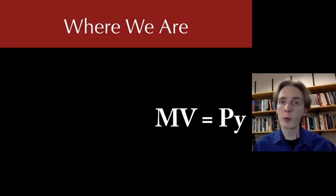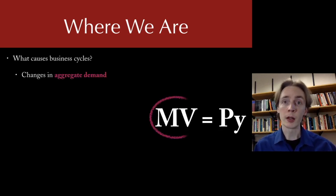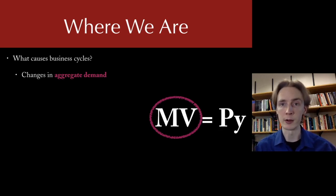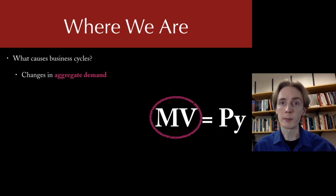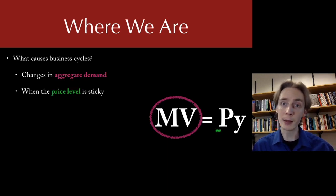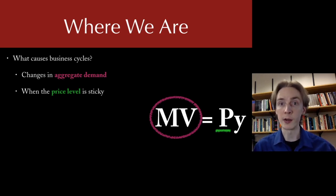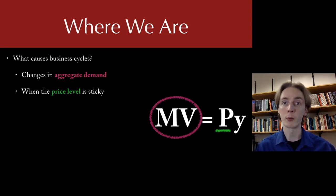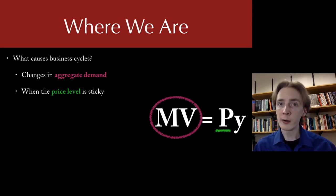Let's recap where we are right now. What we figured out over the last few lectures is that business cycles happen because of changes in aggregate demand. Aggregate demand refers to the left-hand side of the equation of exchange, that M times V. Business cycles happen when aggregate demand changes and when the price level is sticky. If prices adjusted immediately, we wouldn't get any disequilibria where quantity supplied is greater than quantity demanded or vice versa. But when prices are sticky, real income is going to fluctuate temporarily.